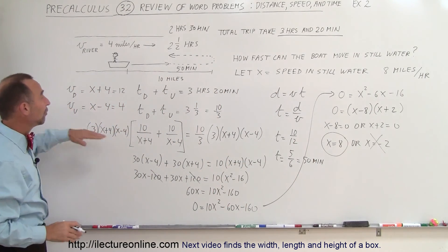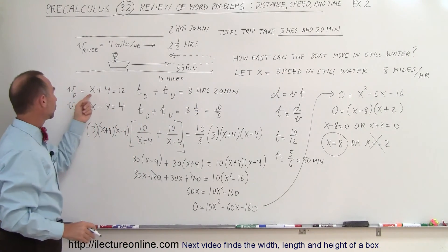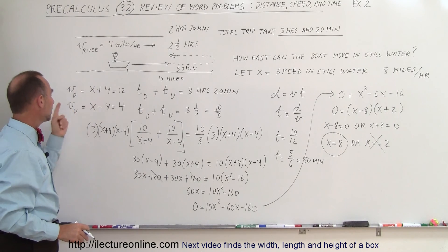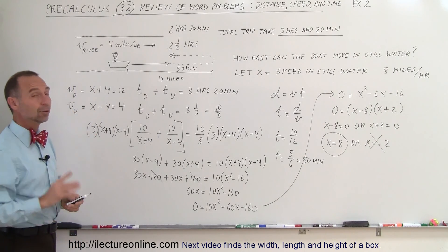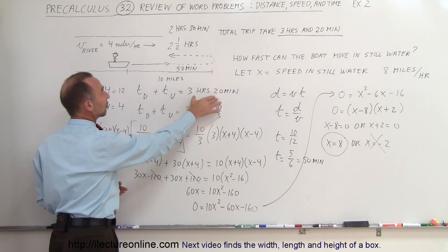Again, real quickly, you define x as the speed in still water, which then gives you an expression in terms of x for the velocity downstream and velocity upstream. Then you realize that the total time, which is the time downstream plus the time upstream is 3 hours and 20 minutes.